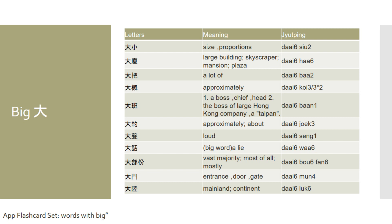If you want to say 'lie' in Cantonese, it is daai wa, daai wa. The next one: if you want to say 'vast majority' or 'mostly,' you would say daai buu fun, daai buu fun. For example, 'the majority of people' would be daai buu fun yan. If you want to say 'main door' in Cantonese, you would say daai muun, daai muun, which also refers to an entrance — the main door, front gate, or main exit.